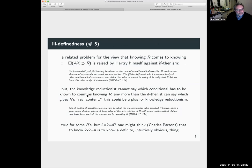The axioms of piano arithmetic are evaluated in light of the prior understanding that that's how numbers behave, you might think. Ill-definedness is the fifth possible problem. A related problem for the view that knowing R comes to knowing necessarily axioms than R is raised by Hartree himself against if-thenism, which again is not his own view. The implausibility of if-thenism is evident in a case of a mathematical assertion R made in the absence of a generally accepted axiomatization.